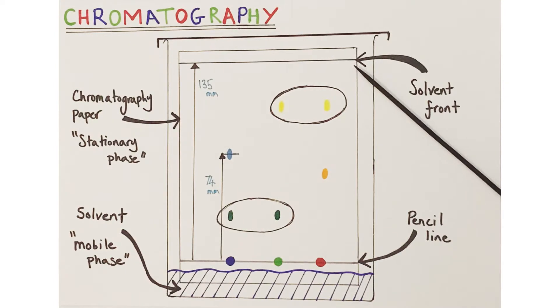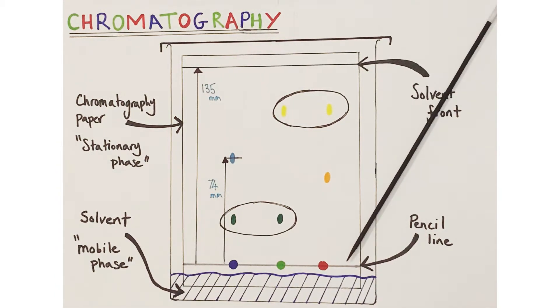Thirdly, you'll note there is a pencil line at the top of the chromatography paper. This is known as the solvent front and it records the maximum distance traveled by the solvent during the course of the experiment itself. Finally, a pencil line is drawn on the paper just above the height of the solvent onto which the colored substances, which usually are dyes, are blotted ready to be separated into their constituent pigments as the solvent travels up the chromatography paper.